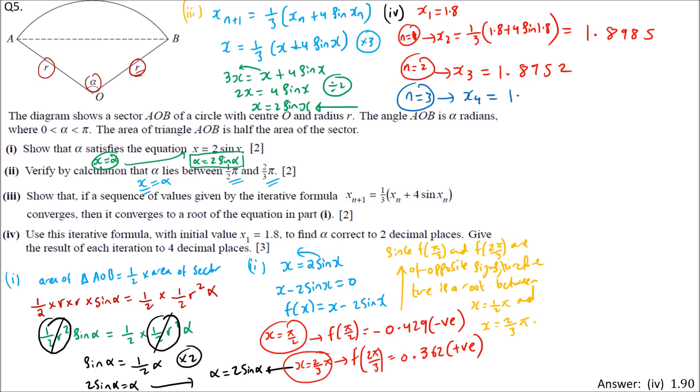We do one more iteration to confirm, getting 0.895. To 2dp, the values are converging. The root alpha is 1.90. That's the fourth part.